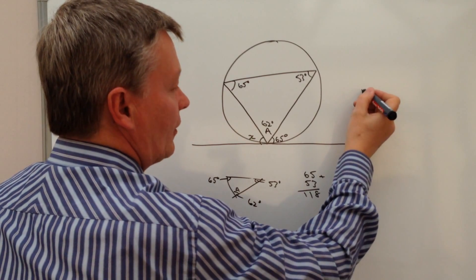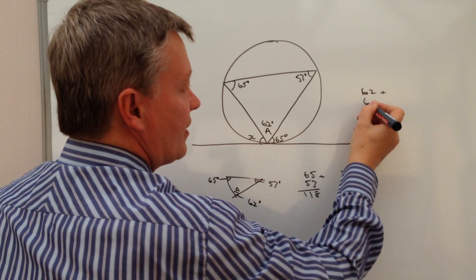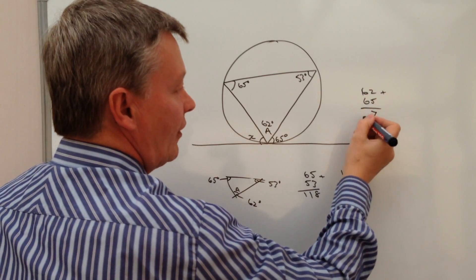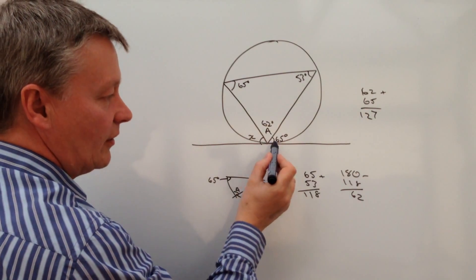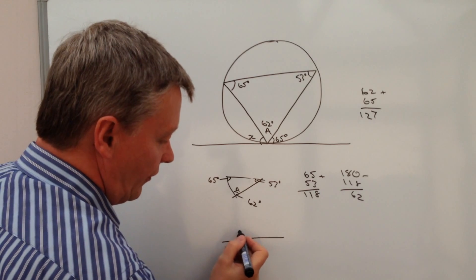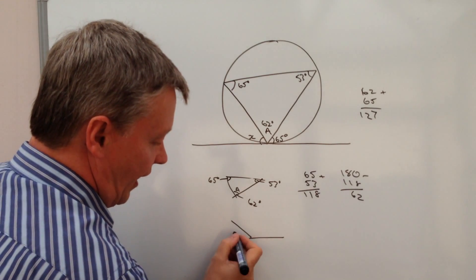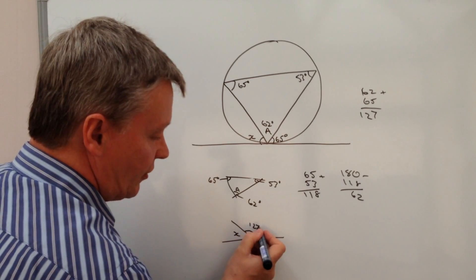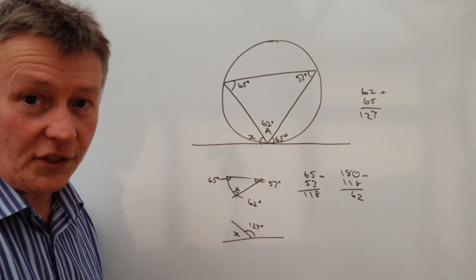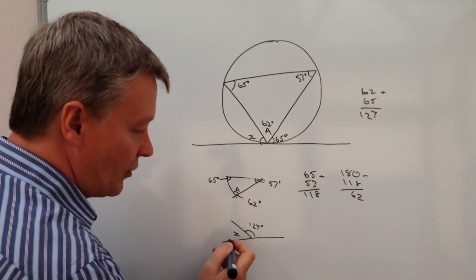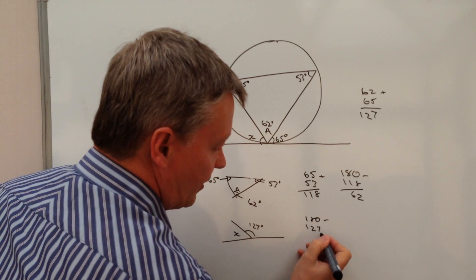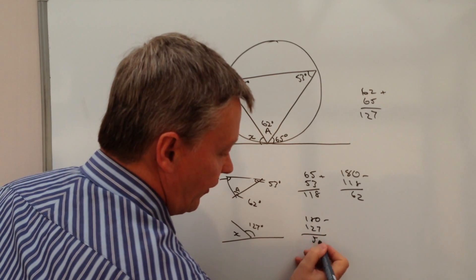I've got 62 plus 65, and 62 plus 65 is 127. So those two angles added together is 127 degrees. Well, that's great, so I just take that away from 180. So 180 take away 127 is going to give me 53 degrees.